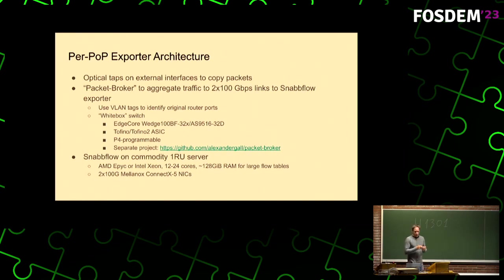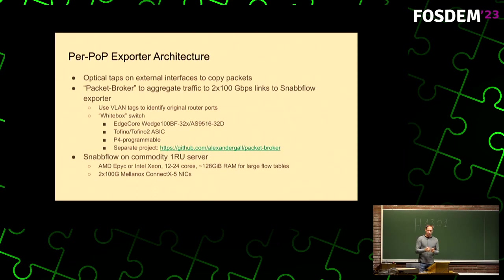It uses VLAN tags to identify traffic. In NetFlow, we also want to keep track of the router ports where the traffic was sent or received on. Because that information gets lost when you aggregate, we use VLANs to tag them.